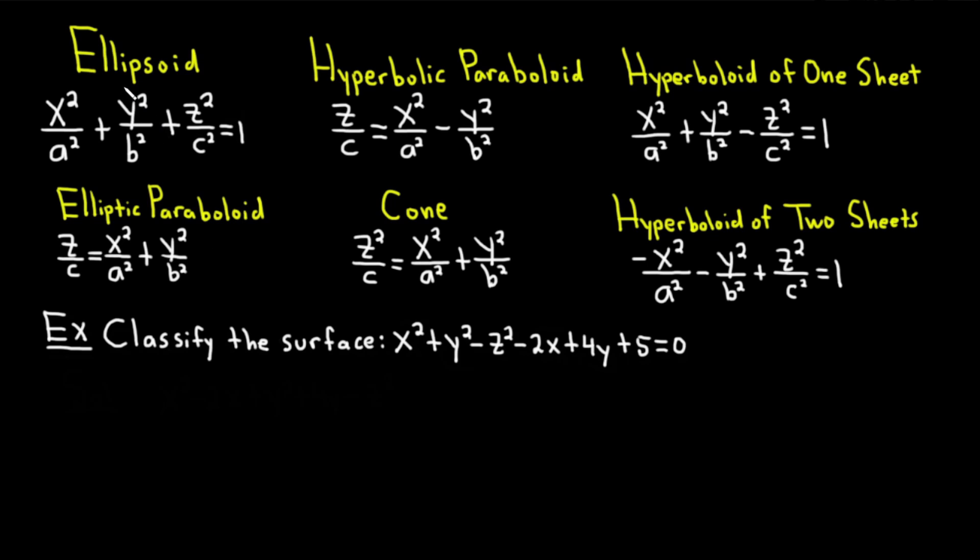The first one is called an ellipsoid, and its formula is x squared over a squared plus y squared over b squared plus z squared over c squared, and that's equal to one. Notice it reminds you of an ellipse, hence the name ellipsoid. So very easy to memorize this one compared to some of the others.